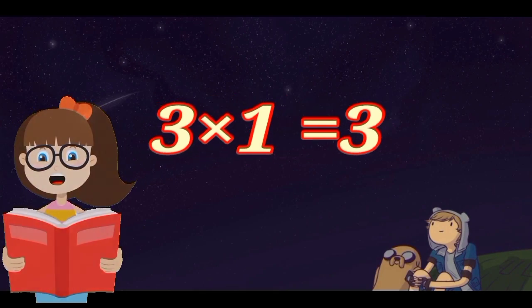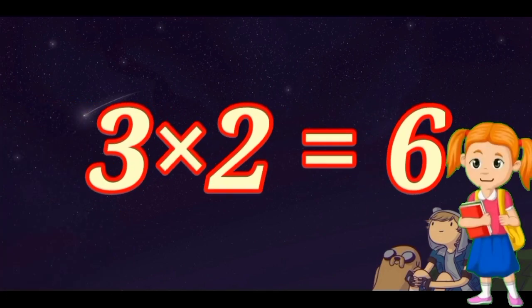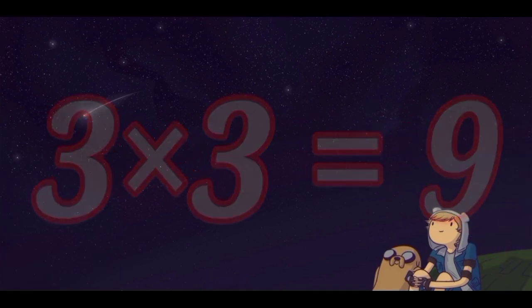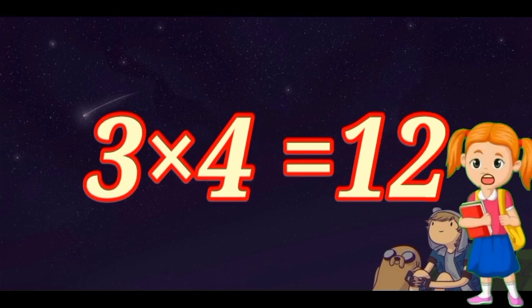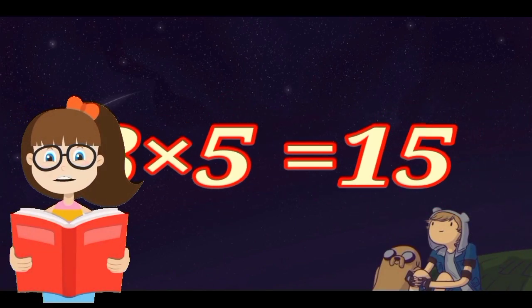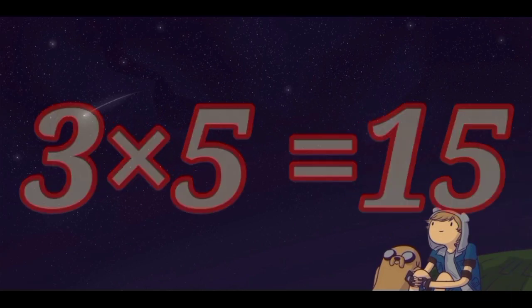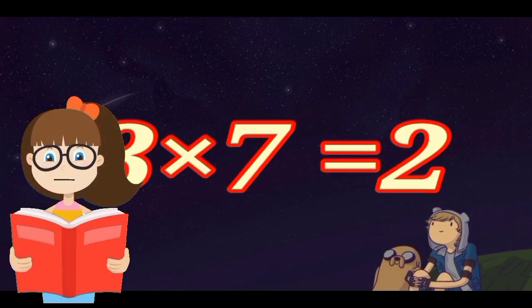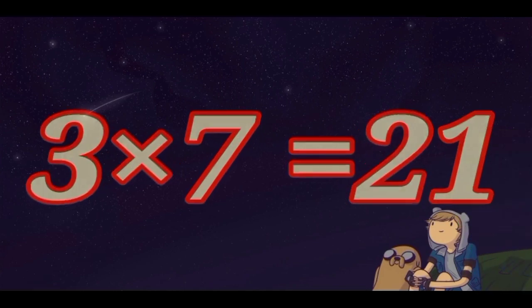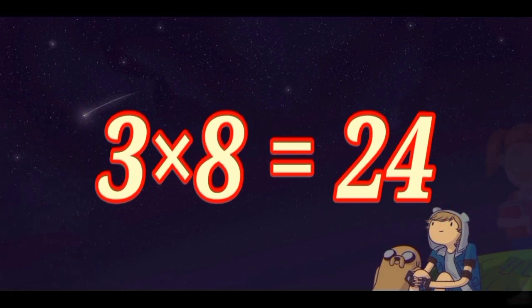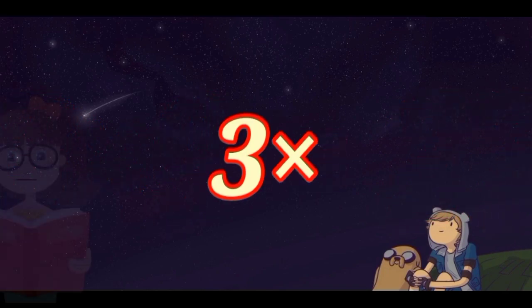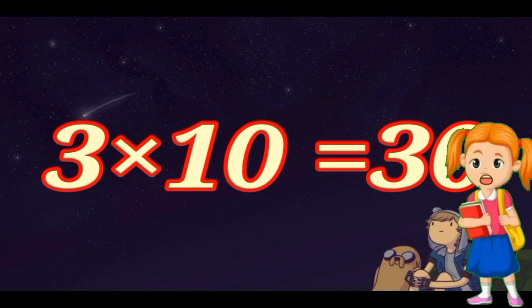3 1s are 3, 3 2s are 6, 3 3s are 9, 3 4s are 12, 3 5s are 15, 3 6s are 18, 3 7s are 21, 3 8s are 24, 3 9s are 27, 3 10s are 30.